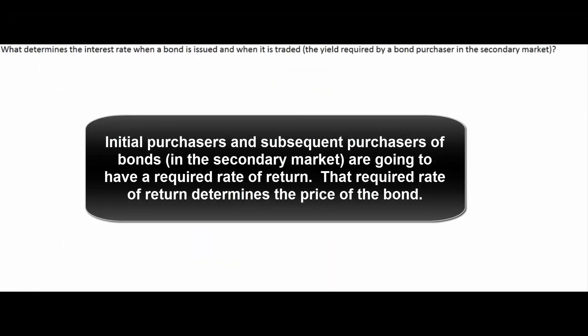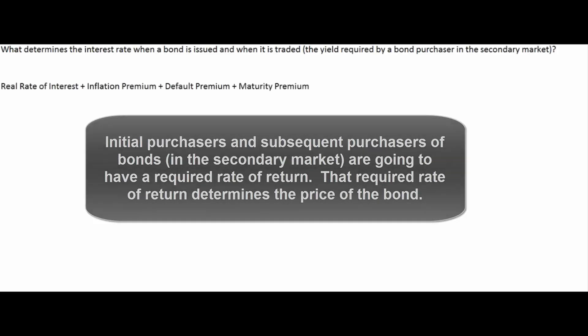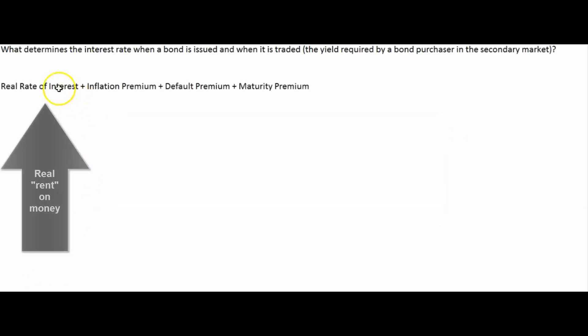So what determines the interest rate when a bond is first issued, or when it's traded in the secondary market? When a bondholder sells and someone new buys in the secondary market, that buyer will have a required rate of return, and that interest rate determines the price of the bond. That rate comes from the real rate of interest — the real underlying cost of renting money.